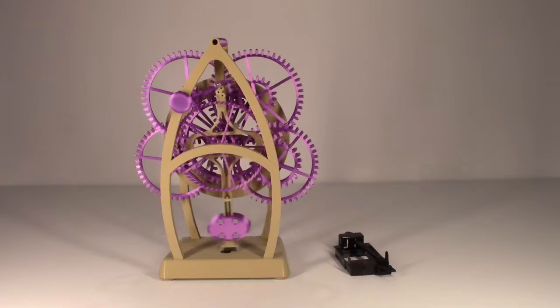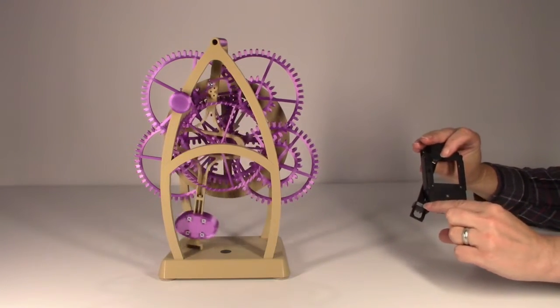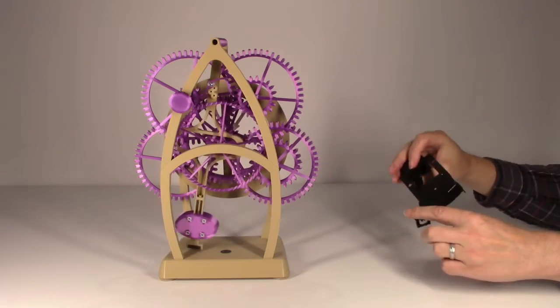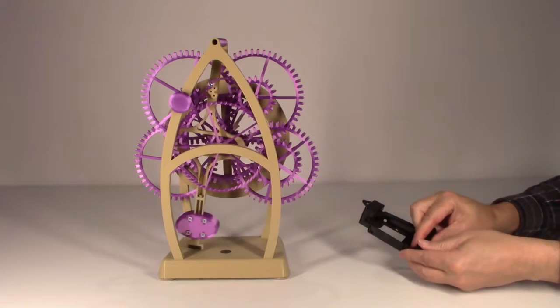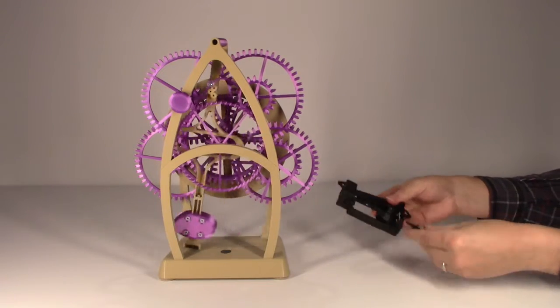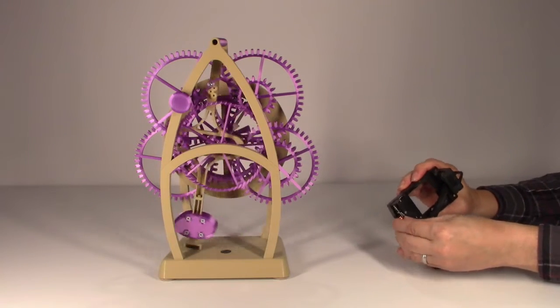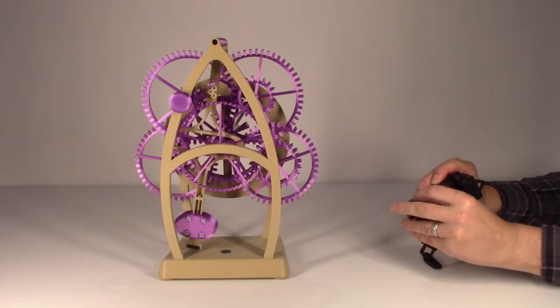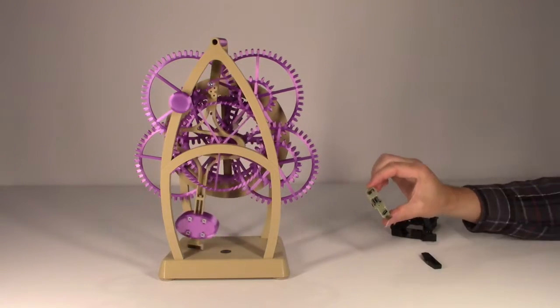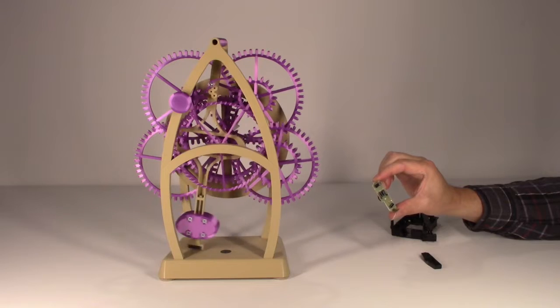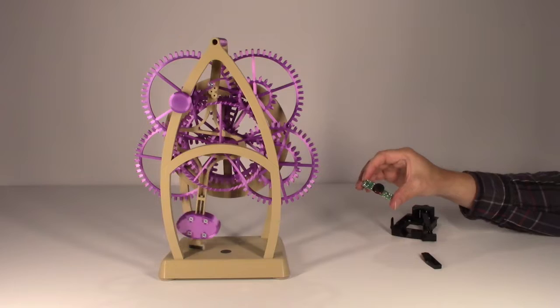The electronics in this clock are really simple. I scavenge the magnet out of the pendulum on this unit, and then open up the compartment, and inside is just a small circuit board with two transistors, three capacitors, two resistors, and a coil.